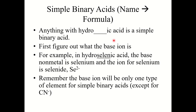Now let's look at going from name to formula. You'll be able to tell you're working with a binary acid because it starts with the prefix hydro. For example, if given the name hydroselenic acid, you should recognize the base nonmetal is selenium and the ion is selenide, which is Se²⁻. The base ion will be only one type of element for simple binary acids — except for cyanide.